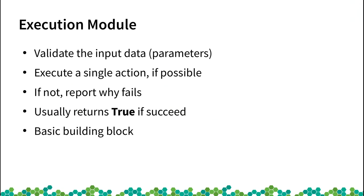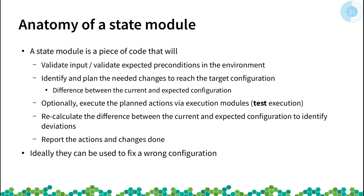Execution modules are the unit element handling one single problem. The state module validates input, checks current status, decides what actions are needed to reach the final state, and if you don't provide the test parameter, executes those actions. It then rechecks the final status and compares with the plan. Something very nice about this: if you express all your problems in these semantics, you can fix a wrong configuration by reapplying your state. And as a side effect, if the state is already in place, you can reapply it multiple times without breaking anything — you have idempotency.